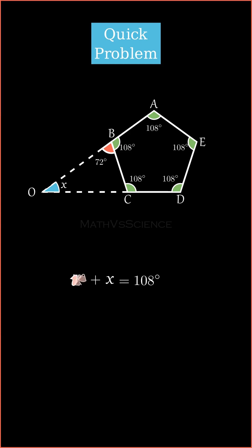We know the value of the red angle, so we put the value in and solve for X. We get 108 degrees minus 72 degrees, which is equal to 36 degrees, and that's the value of X.